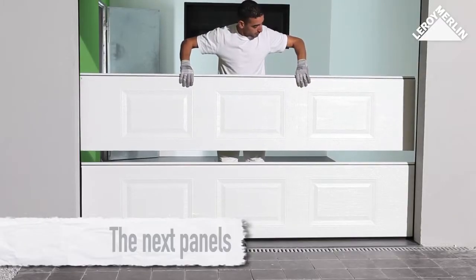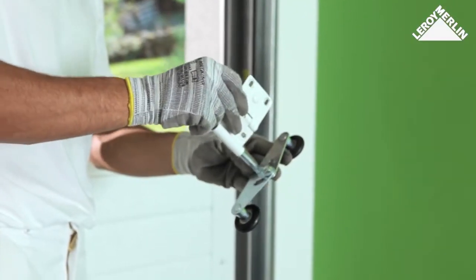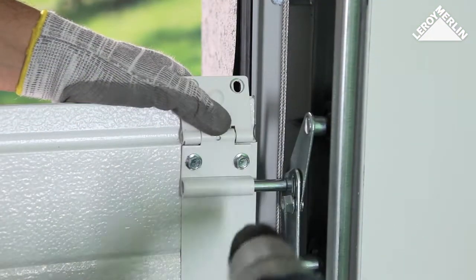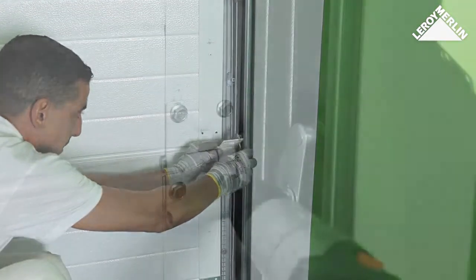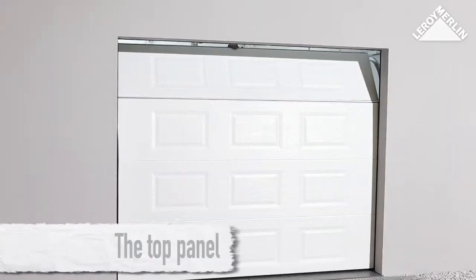The next panels: Put the next panel into position. Screw the top roller brackets to hold it in place and then the lower ones, and join the panels together. Use the same technique with the other panels.